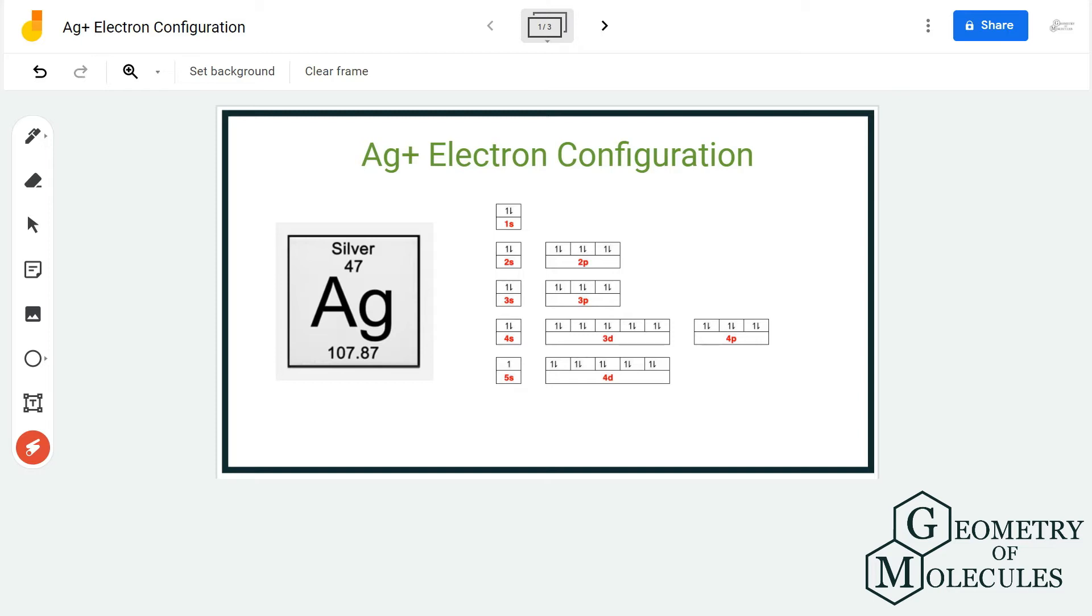To look at the electron configuration of silver with a positive charge, we have to first look at the electron configuration of silver in its ground state. Silver has a total of 47 electrons. Make sure to know the number of electrons before you start writing the electron configuration of any atom.